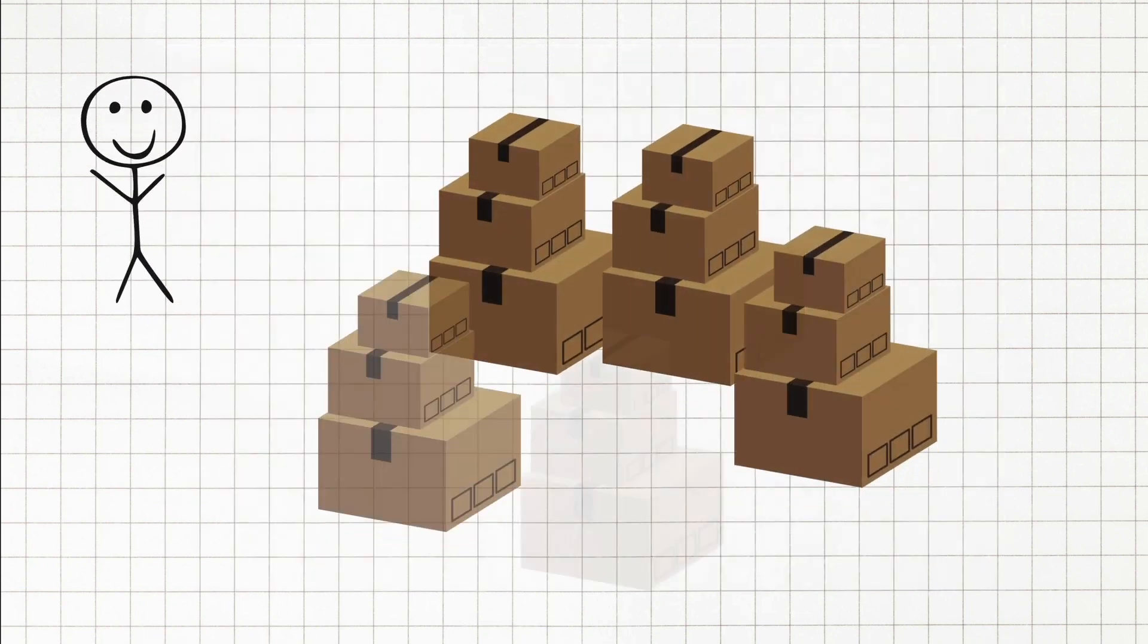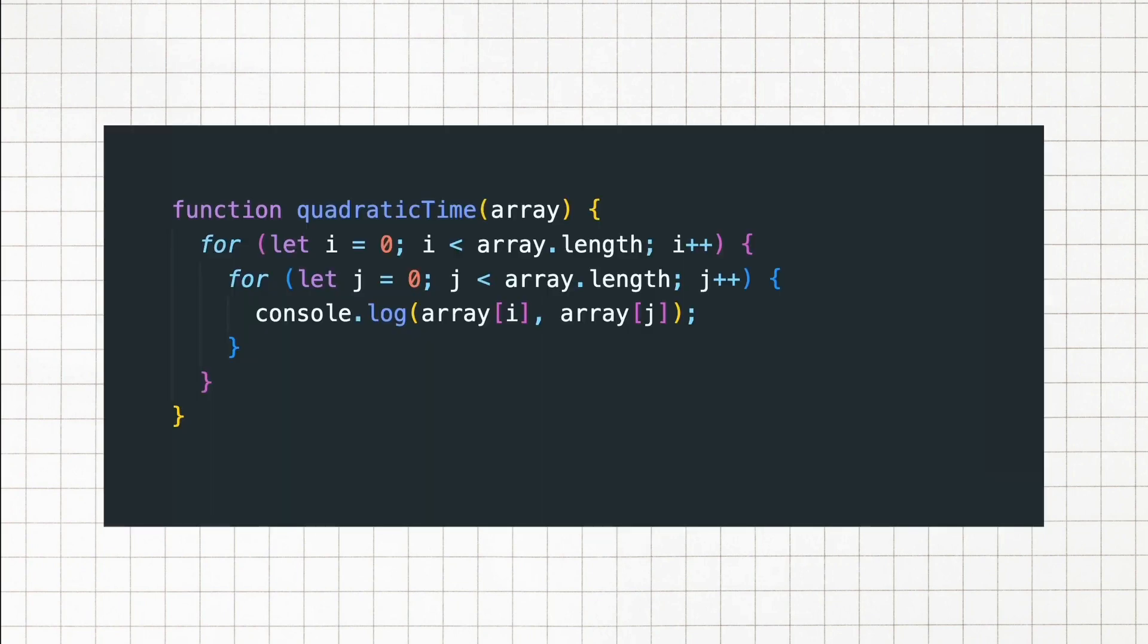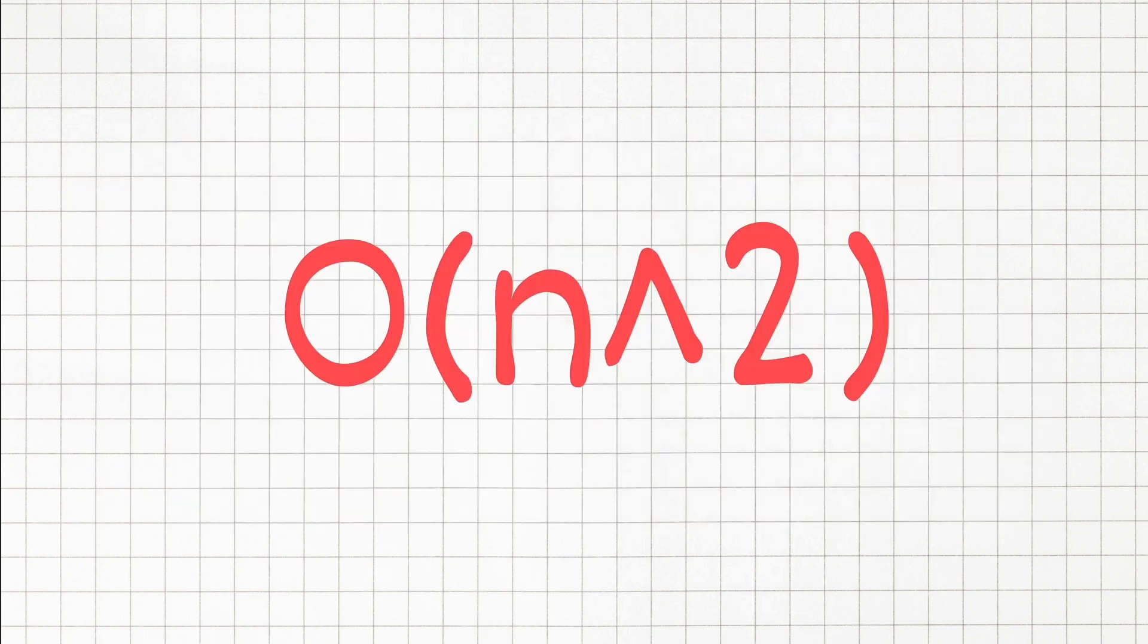for every box in our room, you have to open it and compare it with every other box. Here for each element in the array, we are looping through the entire array again. This usually happens when you have two nested for loops, which gives us an n squared operations.